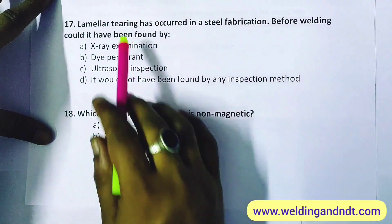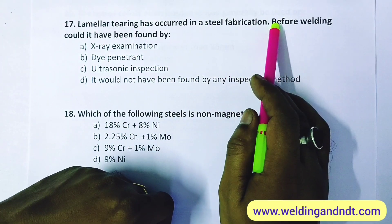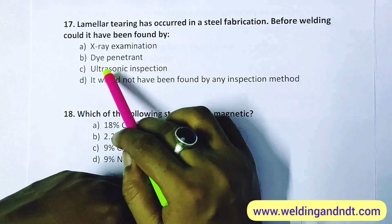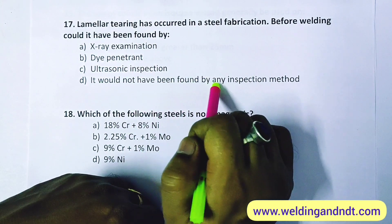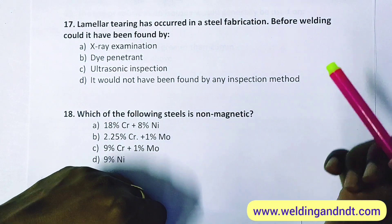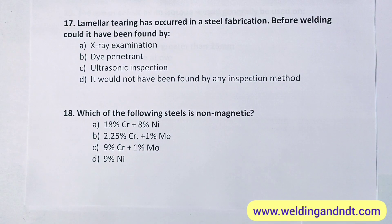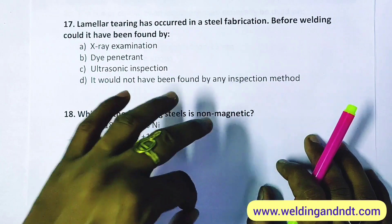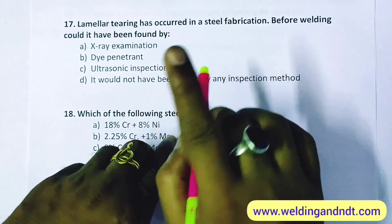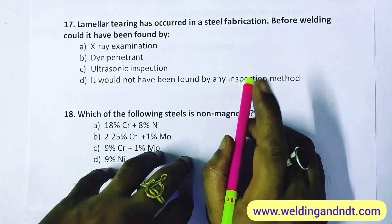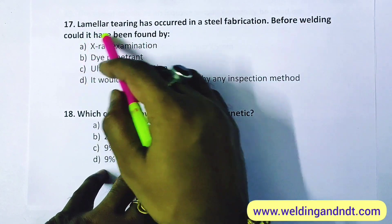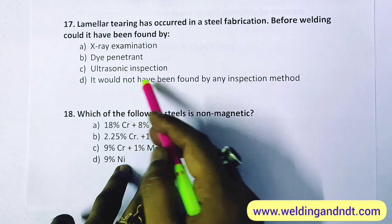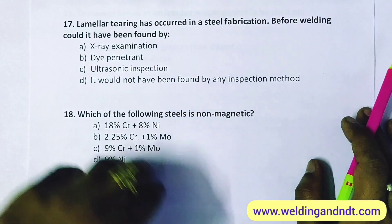Question 17: lamellar tearing has occurred in a steel fabrication. Before welding, could it have been found by X-ray examination, dye penetrant, ultrasonic inspection, or not at all? Lamellar tearing occurs after welding, not before. So before welding, there is no chance of finding it. The answer is D — it could not have been found by any inspection method.